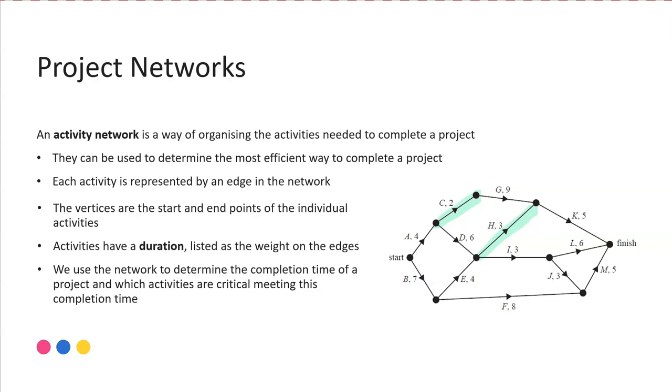We also can look at what we call precedence tables, and that's a different way of representing the information in a table form rather than a network form. We tend to use these networks to help us work out what is the minimum time required to complete the project, as well as other things such as what needs to happen in what order and what activities are critical to that completion time.